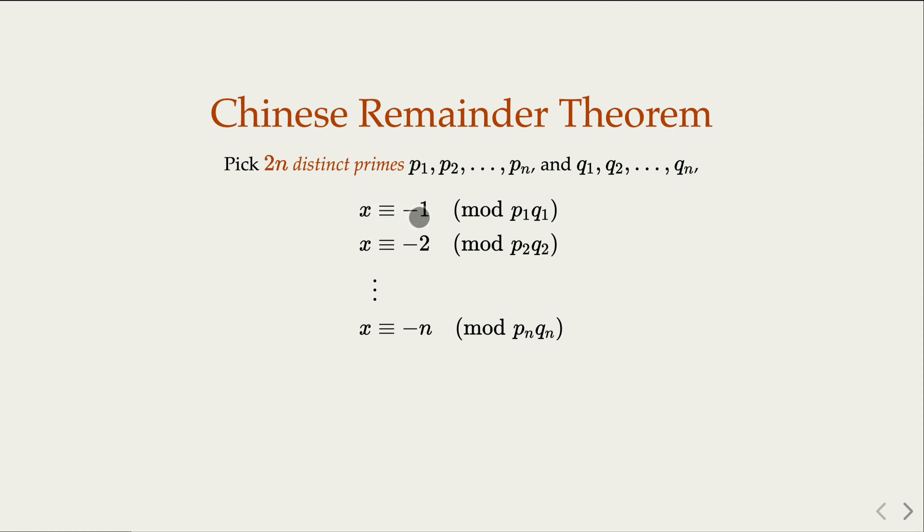x equal negative 1, negative 2, up to negative n. And the modulus here is p₁q₁, p₂q₂, pₙqₙ. So notice that those modulus are pairwise coprime, because all the prime numbers are distinct.